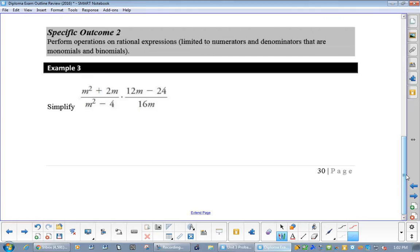Okay, next one. Out of the top here, I can take out an m, leaving me with m plus 2. The bottom is difference of squares, m minus 2, m plus 2. Over here, I can take out a 12, with m minus 2 coming out, and the bottom is just a 16m.